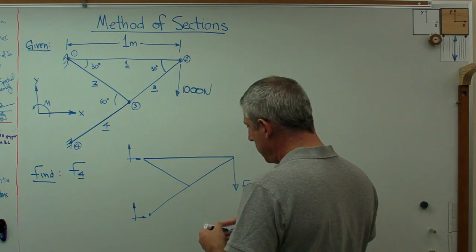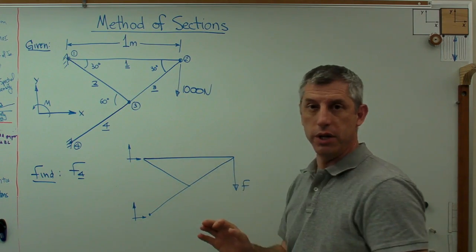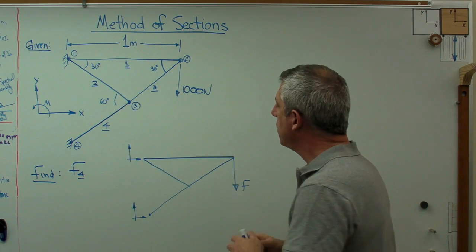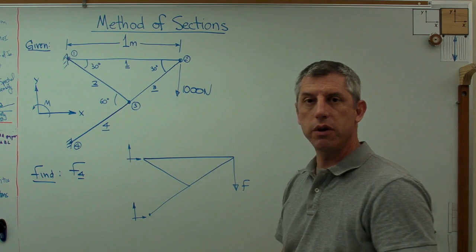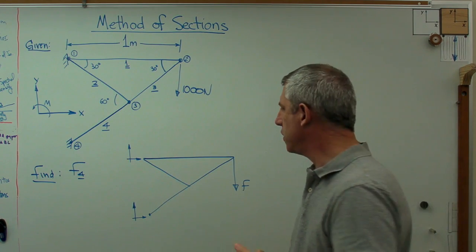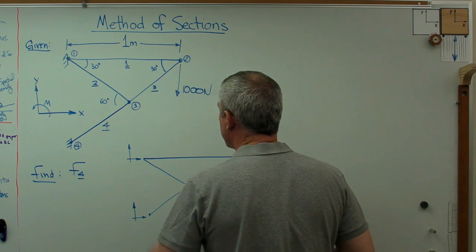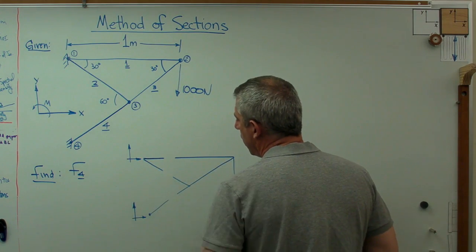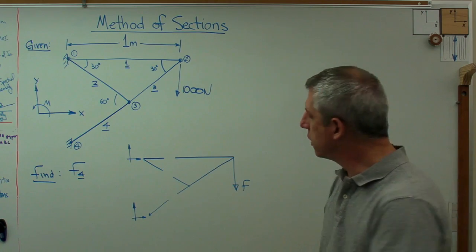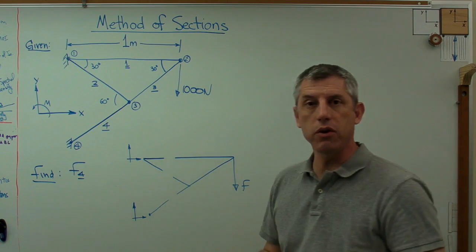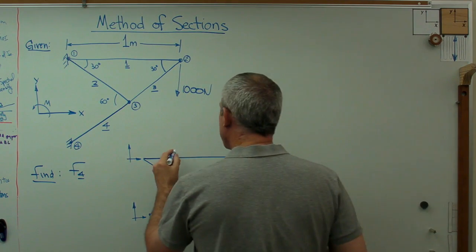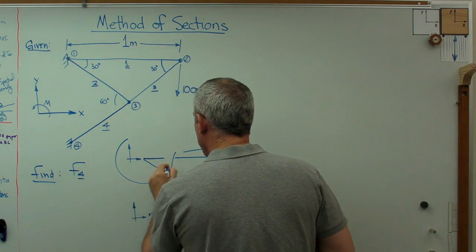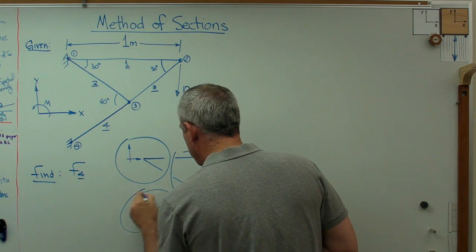Because this structure is assumed to be rigid — and that's what statics is all about, we assume it's not flexible — it means I can take any one part of the structure and put a fictitious cut in it. I can pretend that I have cut it, say right there, and I can figure out the forces at the cuts — what would be internal forces. So basically, if I cut it right there, I've broken it into three sections. Remember: method of sections.